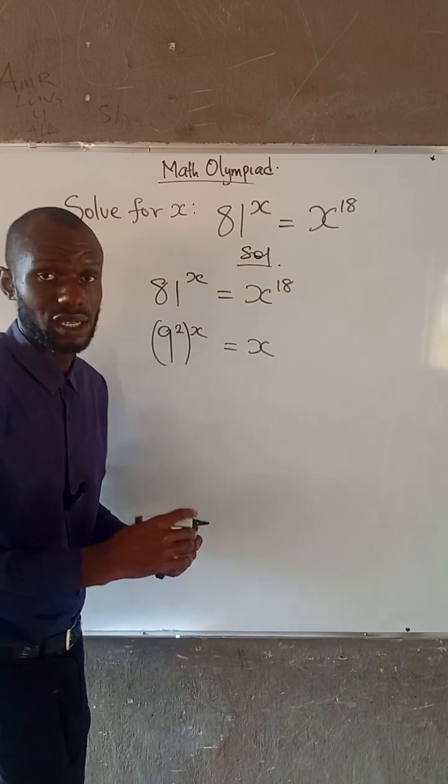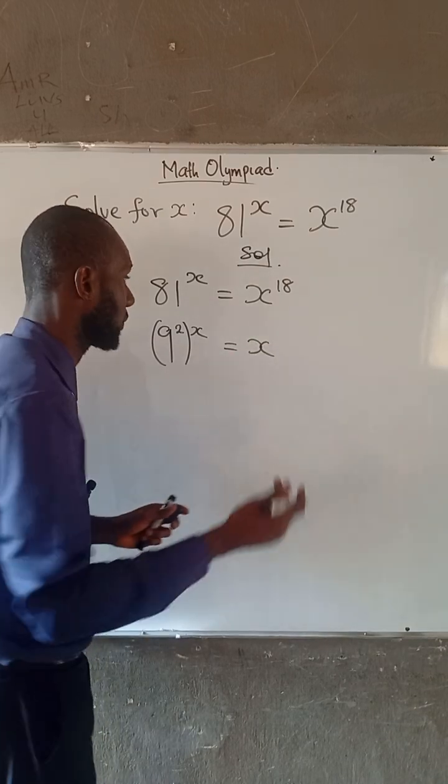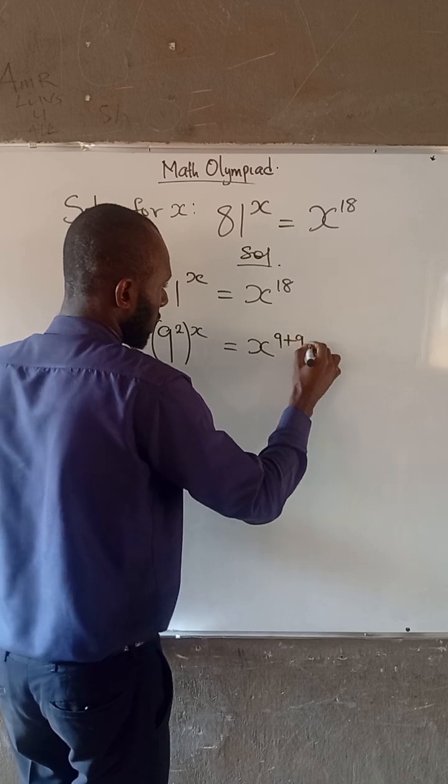And also 18 can be written as 9 plus 9. So 18 is 9 plus 9.